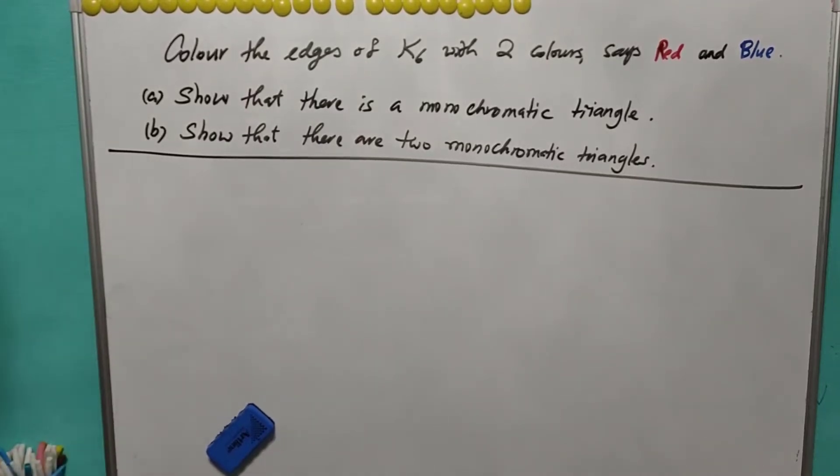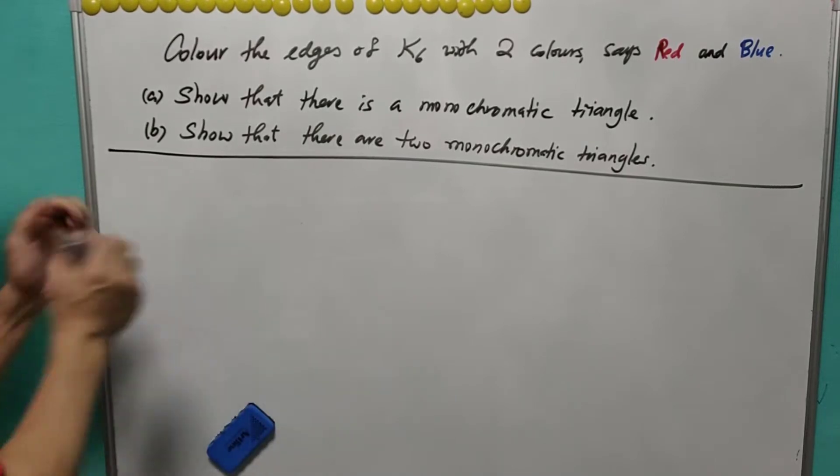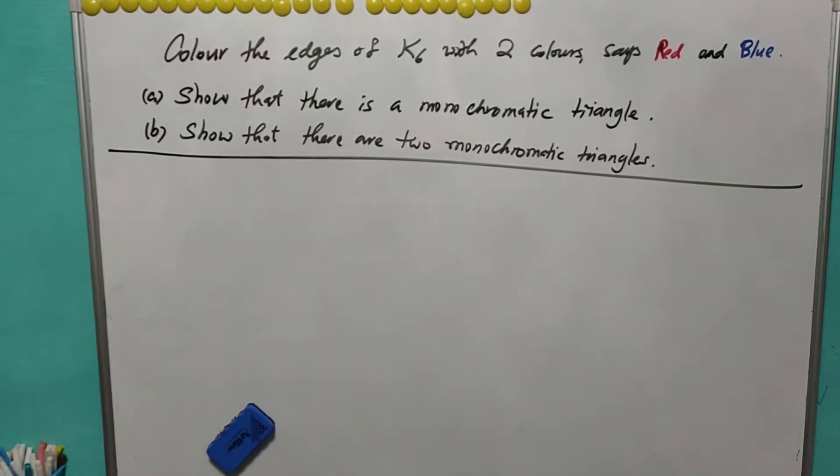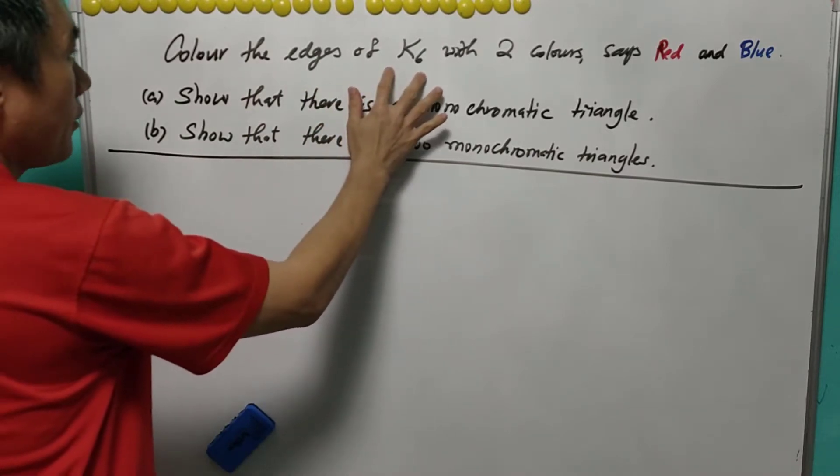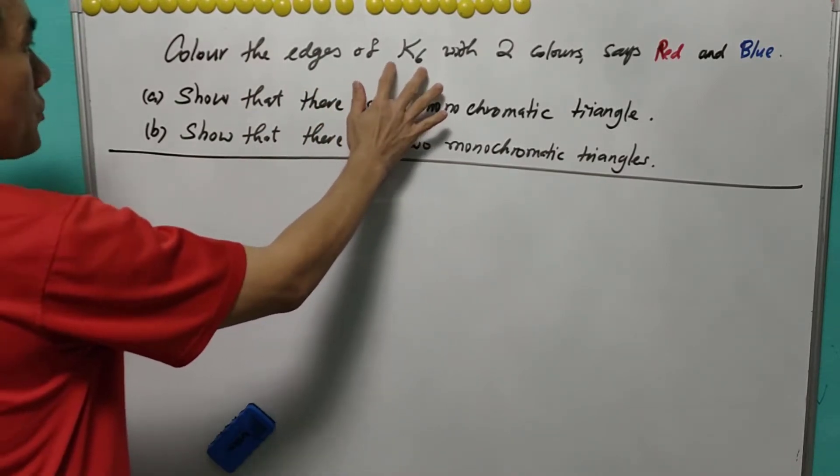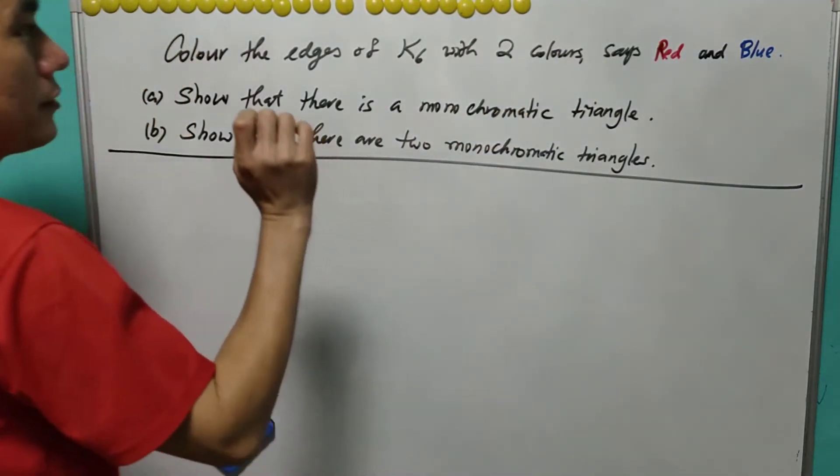Today, let's look at this question from the topic of either pigeonhole principle or graph theory. For this question, we are asked to color the edges of a complete graph K6 with only two colors, either red or blue.